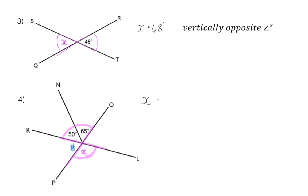So, to determine X, we will have to take the 50 degrees and add the 65 to that, because we have vertically opposite angles, and that means that X is 115 degrees.